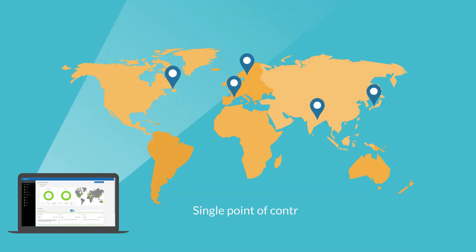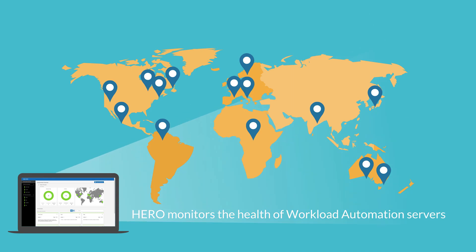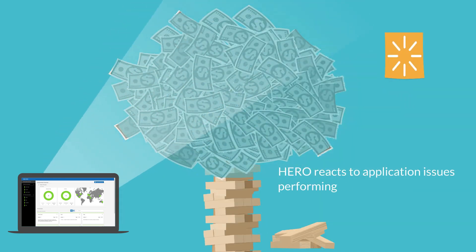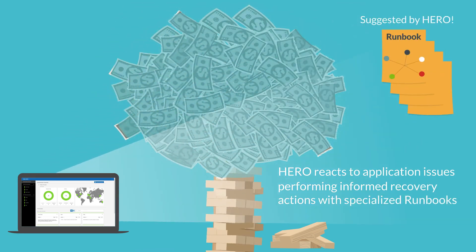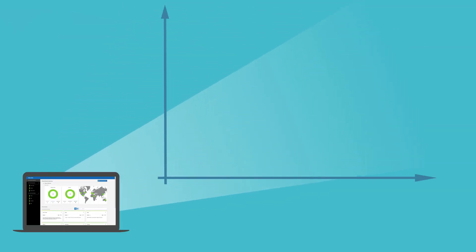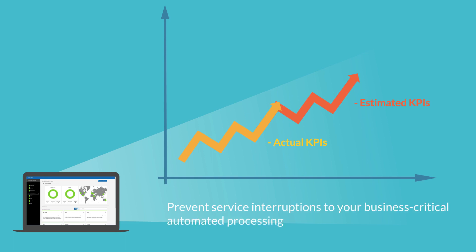From a single point of control, Hero monitors the health of workload automation servers and reacts to common application issues by performing informed recovery actions with specialized runbooks. Hero also collects and shows you trends of actual key application performance indicators.